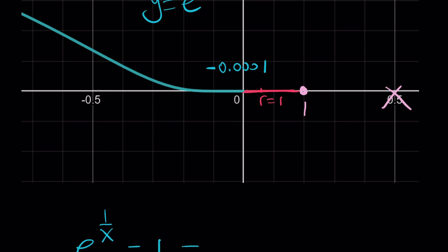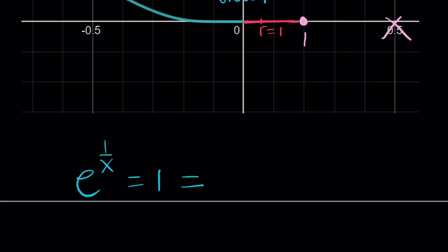And theta, the angle, is just going to be 0 radians, or I can use 2π, 4π, and so on and so forth.